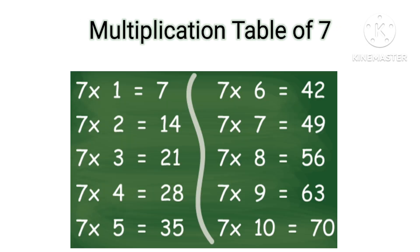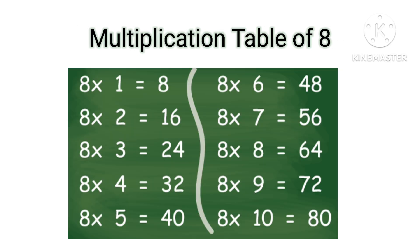Table of 7: 7×1=7, 7×2=14, 7×3=21, 7×4=28, 7×5=35, 7×6=42, 7×7=49, 7×8=56, 7×9=63, 7×10=70.